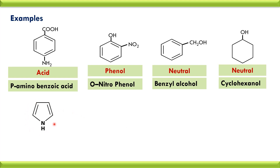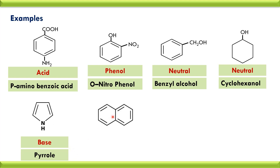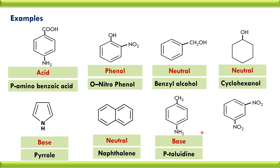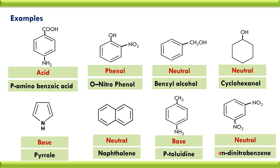In a heterocyclic ring, an NH group is present — that NH group is a secondary amino group, therefore the type of the compound is base. The name of the compound is pyrrole. Naphthalene is a hydrocarbon, therefore the type of the compound is neutral. In another compound, there is a methyl group attached to benzene and an amino group at the para position — as the amino group is present, the type of the compound is base, and the name of the compound is para-toluidine. In a compound with two nitro groups on benzene ring, the type of the compound is neutral, and the name is meta-dinitrobenzene.